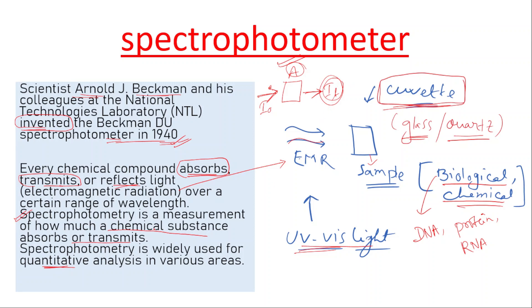Spectrophotometry measures how much chemical substance can absorb and transmit light — we use a spectrophotometer as the instrument. The transmittance and absorbance are recorded digitally. We can convert the digital signal and see the numerical value.